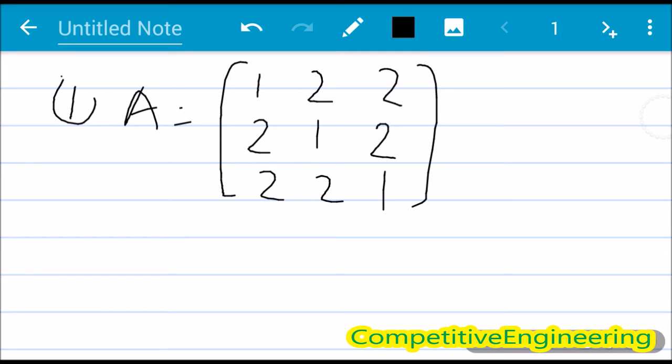So what is the method? We will be writing the first two columns on the right side, that is [1,2,2; 2,1,2; 2,2,1], that same matrix, then the first two columns [1,2,2; 2,1,2].